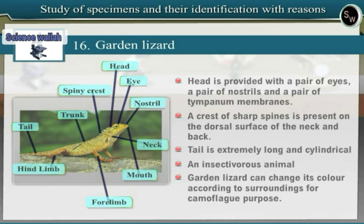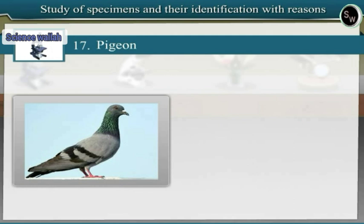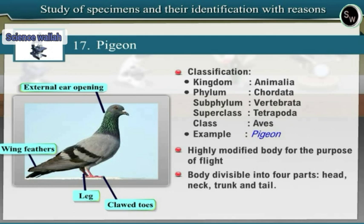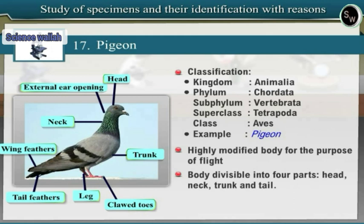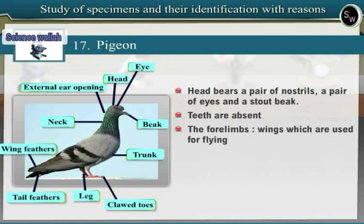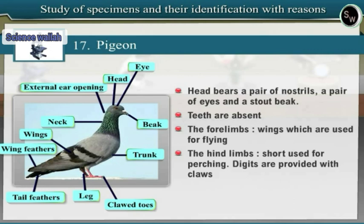Specimen 17: Pigeon. Observe the specimen of pigeon. Pigeon belongs to phylum Chordata, subphylum Vertebrata, superclass Tetrapoda, class Aves. Class Aves includes birds, and the body of a bird is highly modified for the purpose of flight. The body of a pigeon is divisible into four parts: head, neck, trunk and tail. The body is covered with an exoskeleton of feathers. The head bears a pair of nostrils, a pair of eyes and a stout beak. Teeth are absent. The forelimbs are modified into wings used for flying. The hind limbs are short, used for perching. Digits are provided with claws. Pigeon is commonly seen in urban areas.